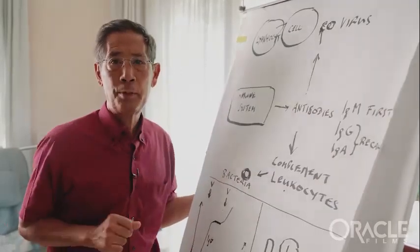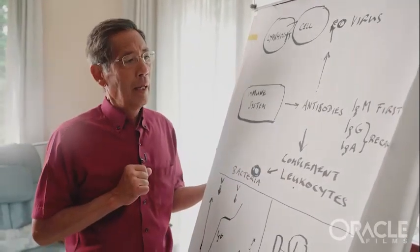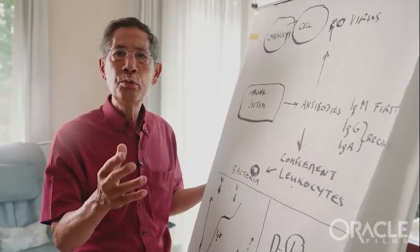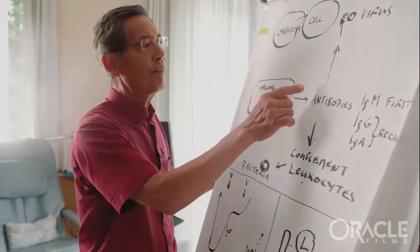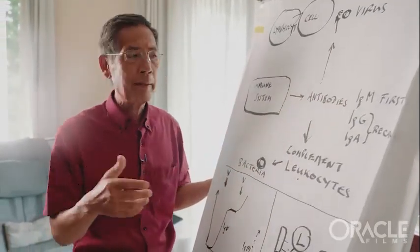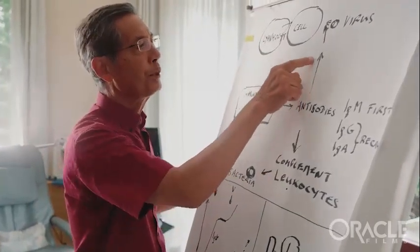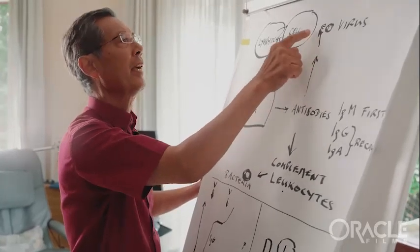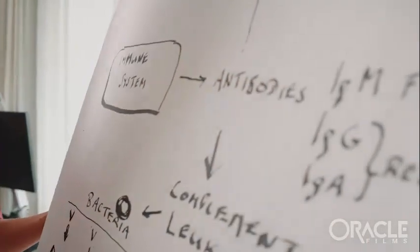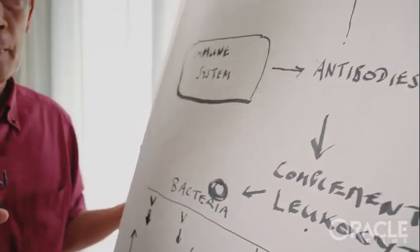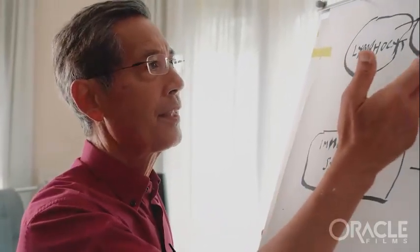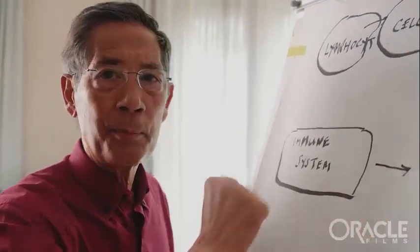Now, these antibodies serve principally two functions. One function is that if it's a virus that the antibodies are supposed to combat, the antibodies can try to prevent the entry of the virus into your cell. This is what the antibodies to corona are supposed to do. They are called protective antibodies because they protect the cell from getting infected by the virus.